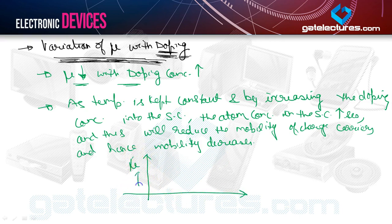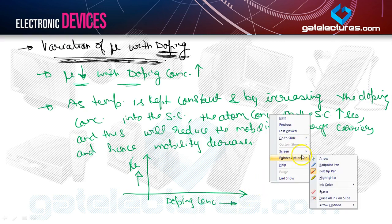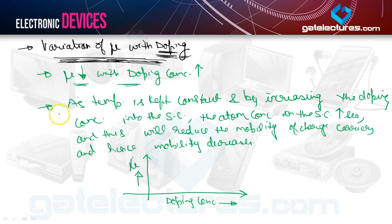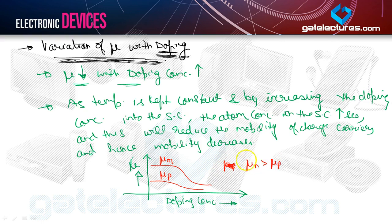Here is the plot: the y-axis is mobility of charge carriers and the x-axis is doping concentration. The mobility of electrons is greater than mobility of holes, so both curves decrease with increasing doping concentration. This variation is applicable for both electrons and holes.